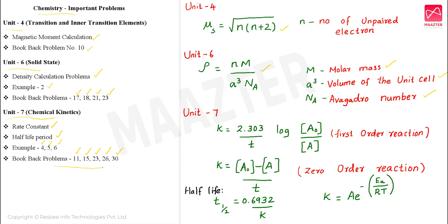Next, in this unit we will use the important formula: K equal to 2.303 divided by T, multiplied by log of concentration of A₀ divided by concentration of A. That is the integrated rate law for first-order reaction. It is a very important formula. Next, K equal to concentration of A₀ minus concentration of A, divided by T — that is the integrated rate formula for zero-order reaction.